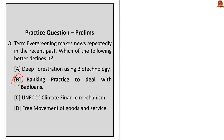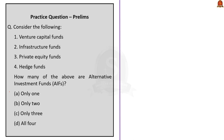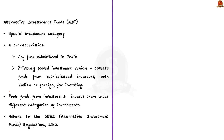Let us move on to the next MCQ of the day. It lists four types of funds and asks us how many of them will fit into the definition of Alternative Investment Fund. AIF or Alternative Investment Funds are special investment category funds which are very different from conventional investment instruments. Any AIF has two characteristics: they are funds established in India, and they are privately pooled investment vehicles which collect funds from sophisticated investors, both foreign and Indian, for investing.